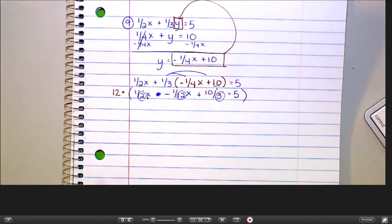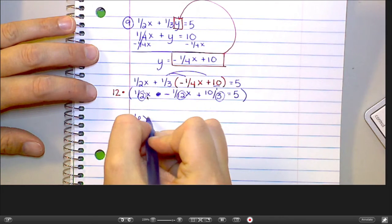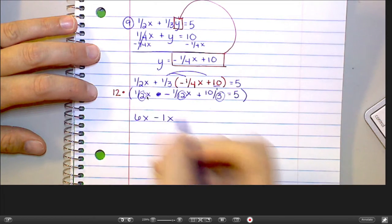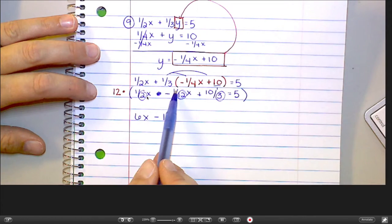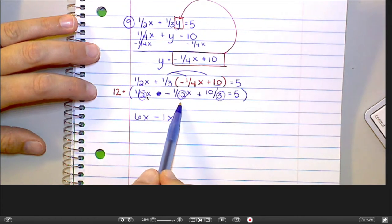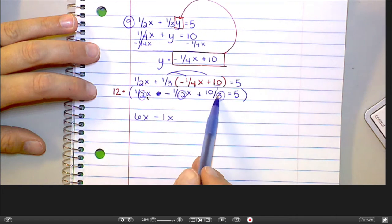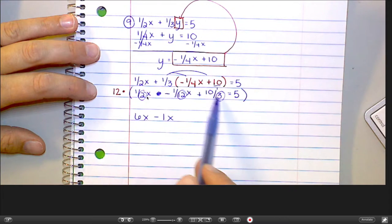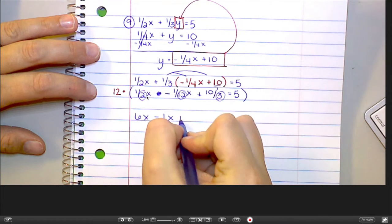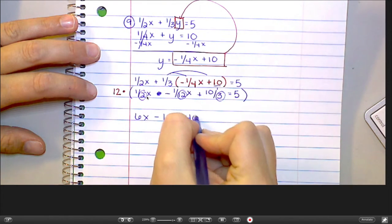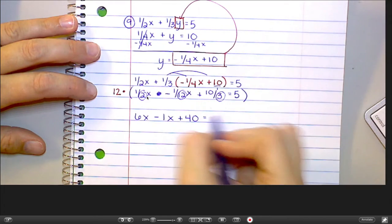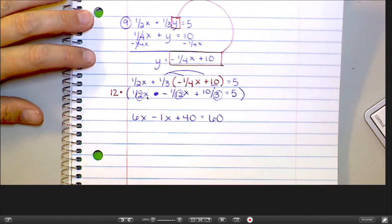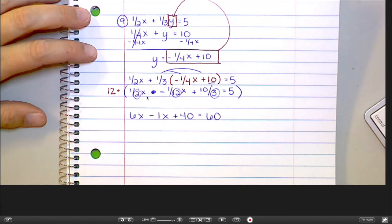So 12 times 1 half is going to be 6. 12 times 1 twelfth is going to be 1. 12 times 10 over 3, that's like 12 times 10, which is 120. And 120 over 3 is 40. And then don't forget to do the 12 times 5 at the end. So that's equal to 60. Way less scary looking that way.